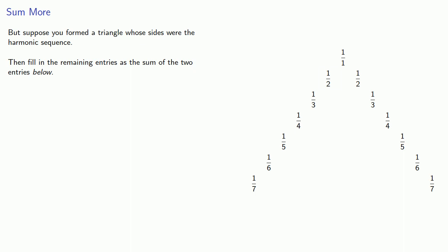Then fill in the remaining entries as the sum of the two entries below. So this 1 half, it should be 1 third plus something. And so we find that something, that's 1 half minus 1 third, gives us 1 sixth.